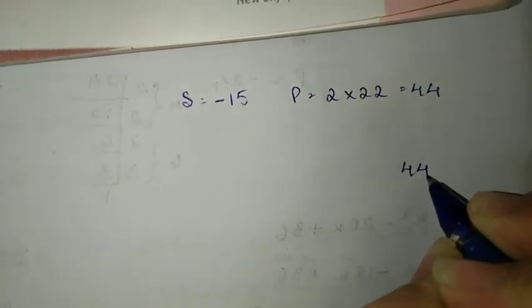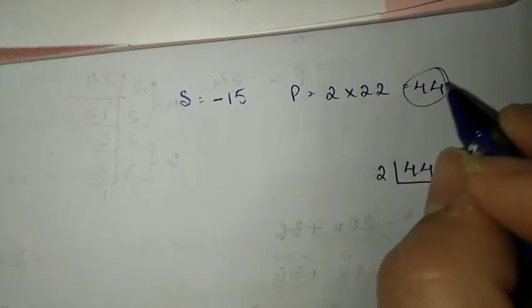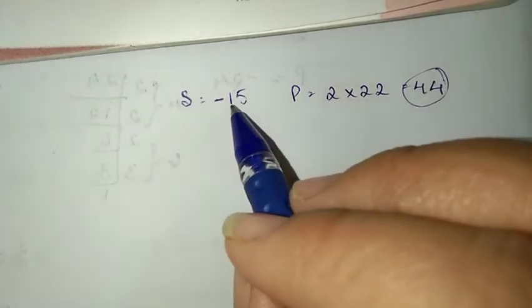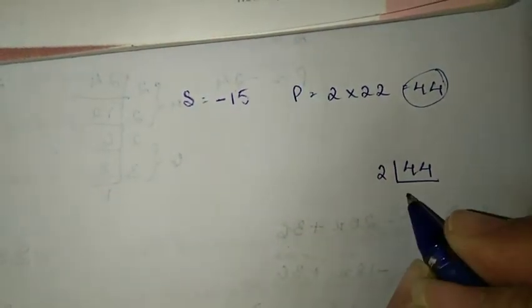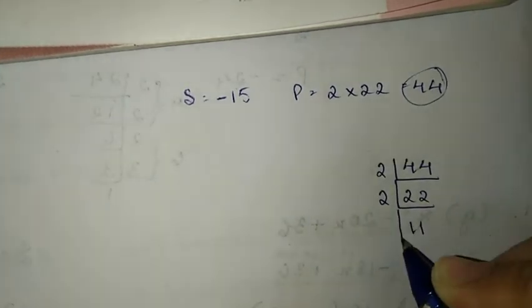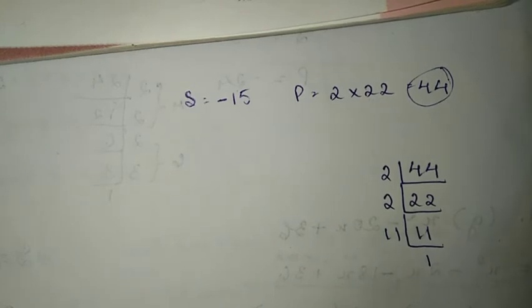Now, 44 - we need the prime factorization to find the factors. So 44 divided by 2 is 22, then 22 divided by 2 is 11.